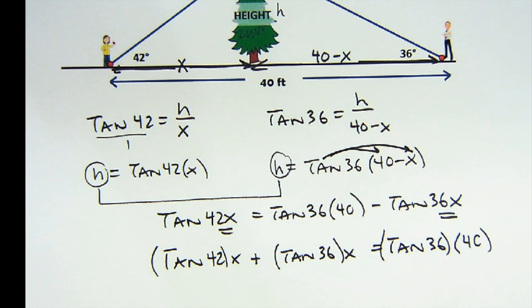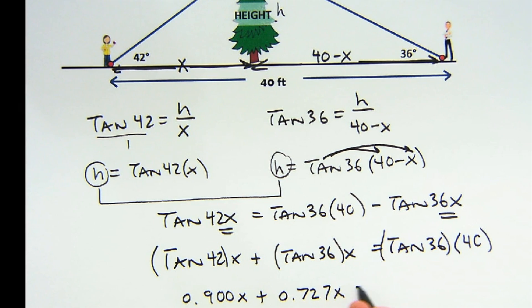And the tangent of 36 is 0.727x, and the tangent of 36 times 40 is 29.06. And so these are both things that have x in them, so I can add them together: 0.727, and then I get 1.627x.